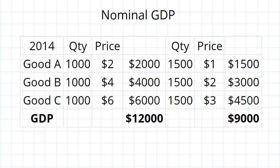Now if we are going to judge these two economies based on their GDP figures, we might say economy one has done better — it's outperformed economy two. After all, it has a higher GDP figure.